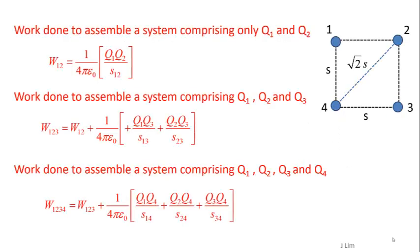The work done to assemble a system comprising only Q1 and Q2 is given by W12. The work done to assemble a system comprising Q1, Q2, and Q3 is given by W123.